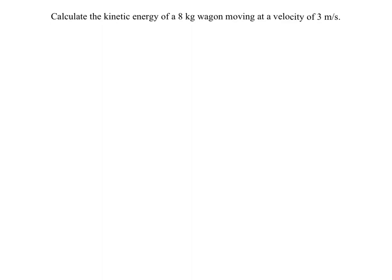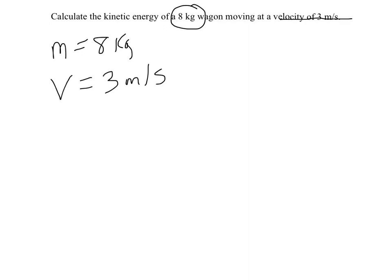It says calculate the kinetic energy of an 8-kilogram wagon. So 8 kilograms is a mass, so I'm going to write mass is 8 kilograms. Traveling at a velocity of 3 meters per second, so velocity is 3 meters per second. And it says I'm looking for kinetic energy, so I'll write KE is unknown. So that's our setup.